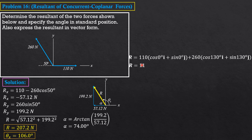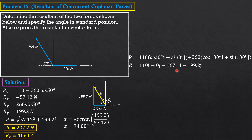So R = 110i + 0j + 260 cos 130° i + 260 sin 130° j. Since 260 cos 130° = −167.1 and 260 sin 130° = 199.2, combining components: R = (110 − 167.1)i + 199.2j = −57.1i + 199.2j Newtons, which are the x and y components of R respectively. When expressed in vector form, this answer is sufficient.